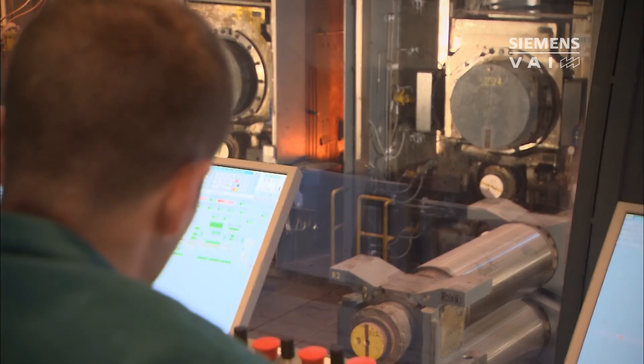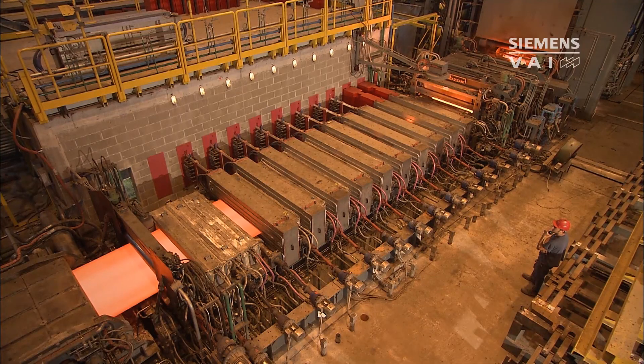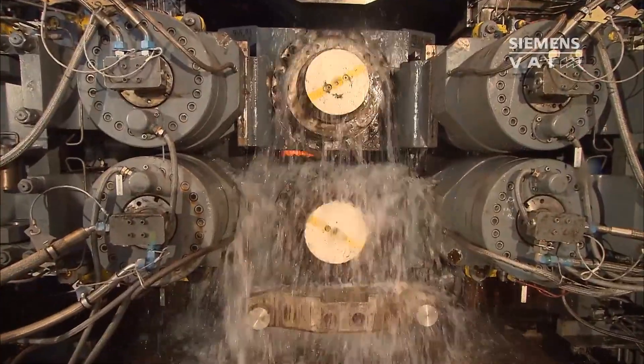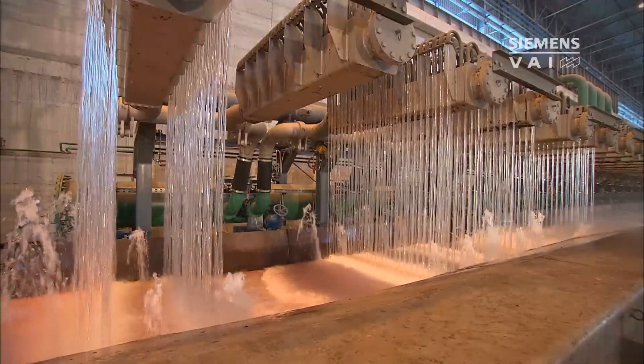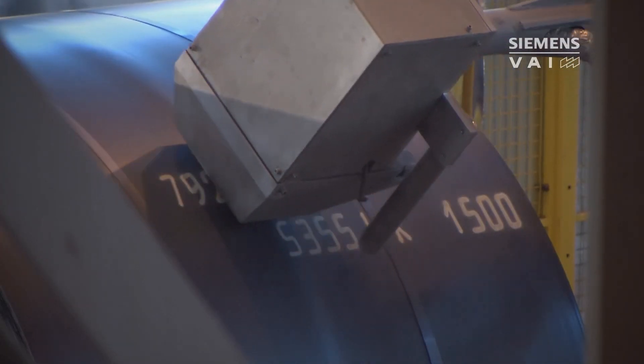Subsequently, the thin intermediate strip can be reheated in just 10 seconds before entering the second rolling phase, thus offering a perfect split between recrystallization in the high reduction mill area and thermo-mechanical rolling in the finishing area.